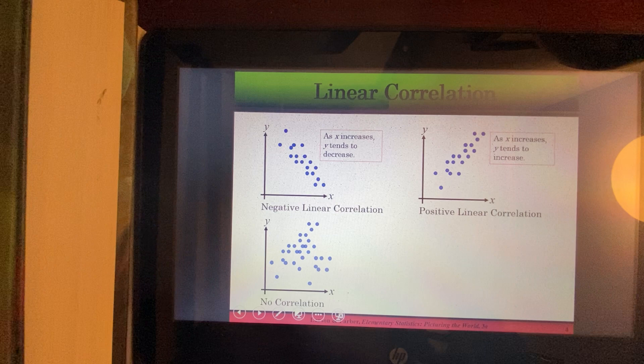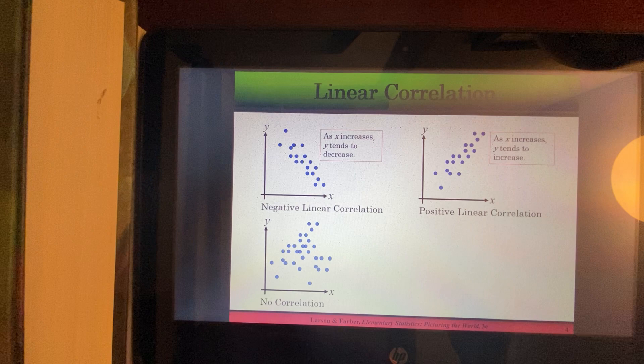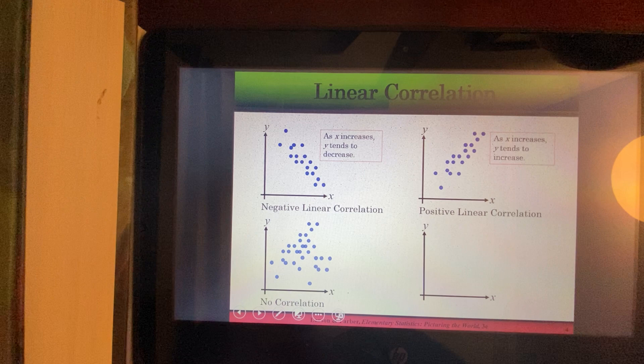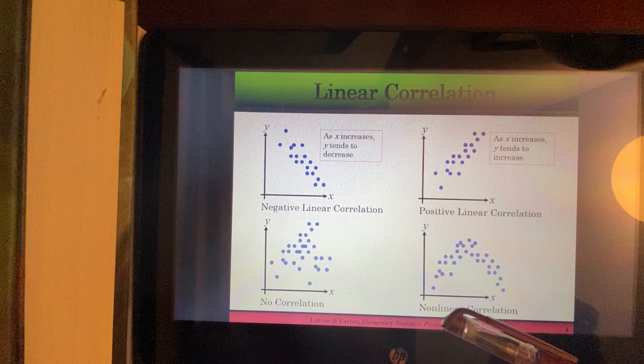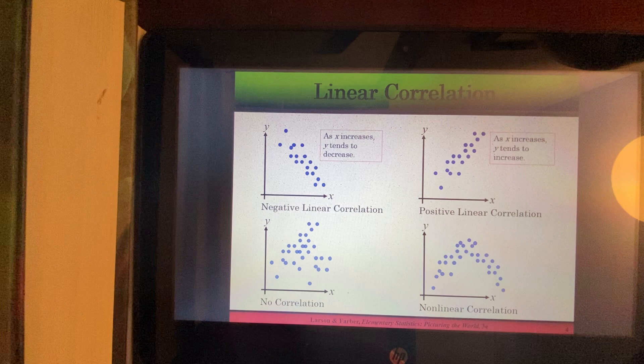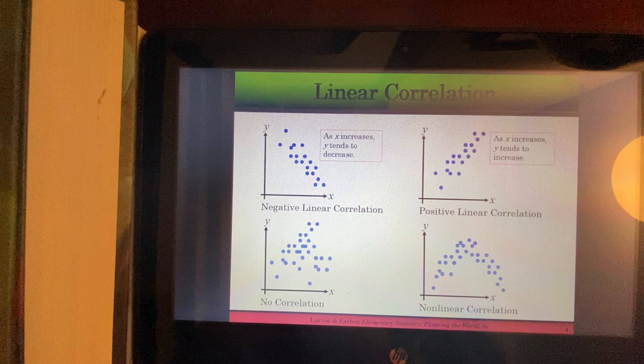Another example. I've got points all over the place. It really doesn't make sense to draw a line through these points. This is no correlation. And our final scatter plot that we'll look at on this slide. It looks like we could probably draw an upside-down parabola here. But that is not a straight line. So this is non-linear correlation. And we're going to be focusing on linear correlation.